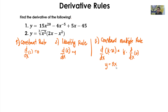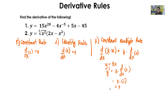For example, given the function 3x: the constant is 3 and u is x. Solving for the first derivative, y prime equals 3 times the derivative of x with respect to x. By the Identity Rule, that is equal to 1, so y prime equals 3. The derivative of 3x is 3.